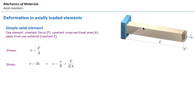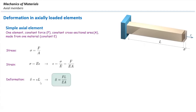Strain in that simple axially loaded element would be force divided by EA. The last equation we need to determine the deformation is the relationship between deformation and strain. Strain in this simple axially loaded element is constant along its length. So to determine the deformation, I simply multiply strain by the length: delta is epsilon multiplied by L. I'm going to plug in the value of epsilon from the previous equation, and that gives us the deformation equation for an axially loaded element.